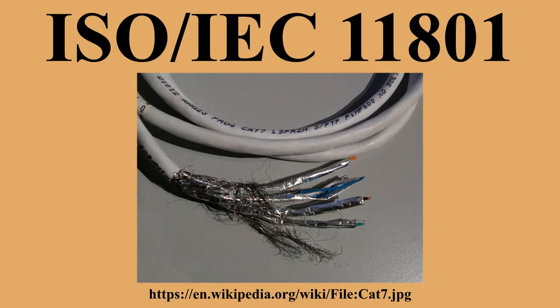International Standard ISO IEC 11801, Information Technology Generic Cabling for Customer Premises, specifies general-purpose telecommunication cabling systems suitable for a wide range of applications. It covers both balanced copper cabling and optical fiber cabling. The standard was designed for use within commercial premises that may consist of either a single building or multiple buildings on a campus.